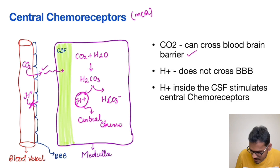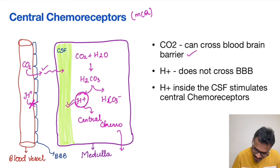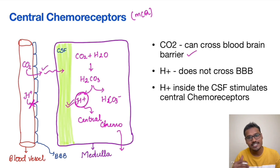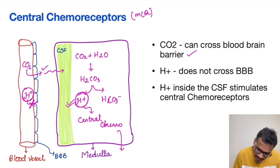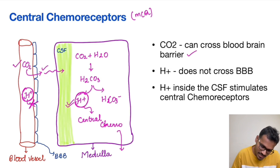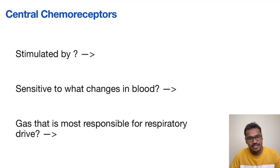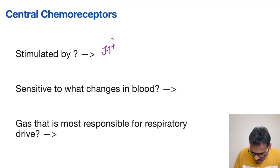So we have two different questions here. One is: what exactly stimulates the central chemoreceptors? The answer is H+. The second question is: the central chemoreceptors are sensitive to what changes in the blood? Even though H+ ions are generated in large amounts in the blood, they cannot cross into the central chemoreceptor region. So the central chemoreceptors are sensitive to CO2 changes in the blood.